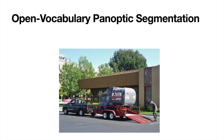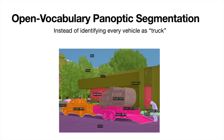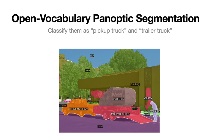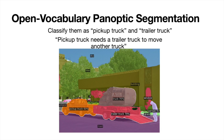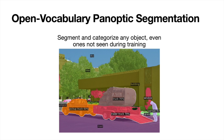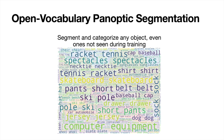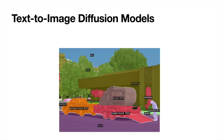Let's first define the task of Open Vocabulary Panoptic Segmentation. Given the input image, in standard closed vocabulary panoptic segmentation, the model would classify every vehicle as a truck. However, in the Open Vocabulary setting, the model can classify them as a pickup truck or a trailer truck — it may understand that a pickup truck needs a trailer truck to move another truck. Formally, in Open Vocabulary Panoptic Segmentation, we aim to segment and categorize any object, even ones not seen during training. There are countless categories in the real world, and how to segment and classify them without explicitly labeling everything is quite challenging.